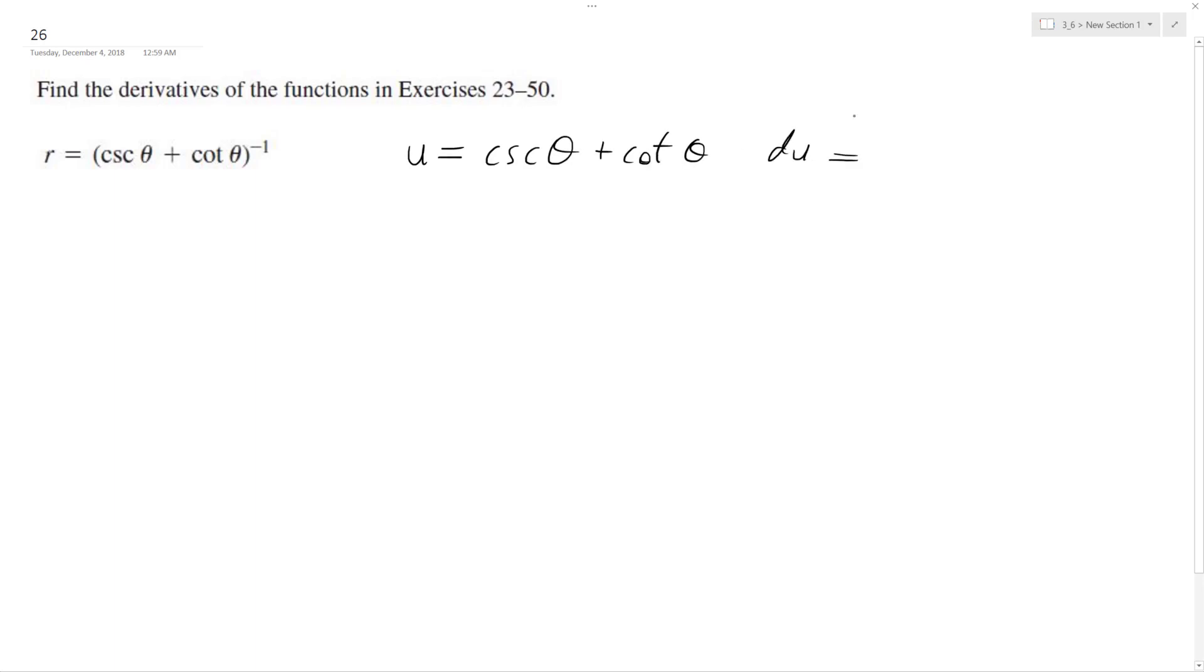And then du will equal the derivative of cosecant, which is negative cosecant cotangent, and the derivative of cotangent is negative cosecant squared. Sorry, this should be theta, not x.